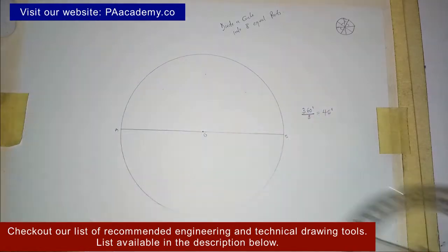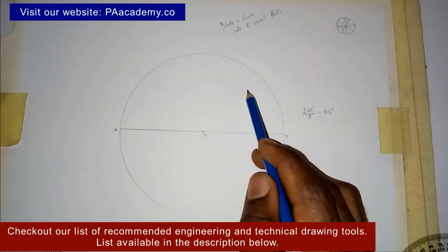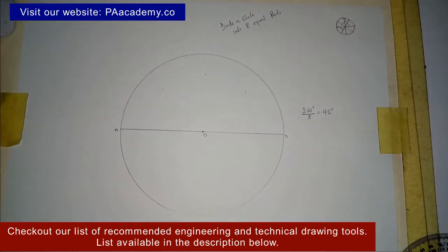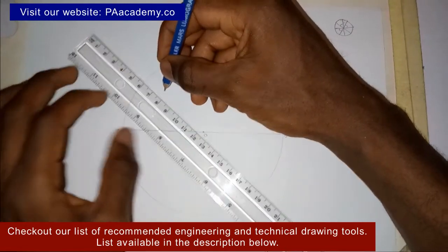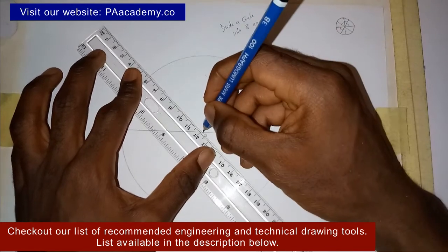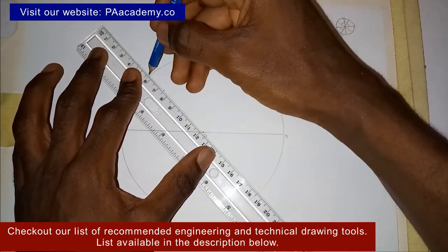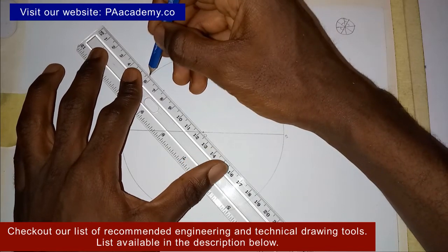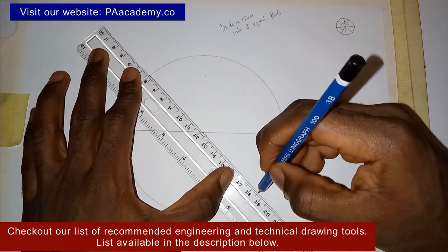Having noted those points, this is 45, this is 90, and this is 135. The next thing you are going to do is from those points, make sure it's on a straight line to the center of the circle. Then you draw a line from the circumference, pass through those lines, through the center, to the opposite side like this. We repeat the same thing here.